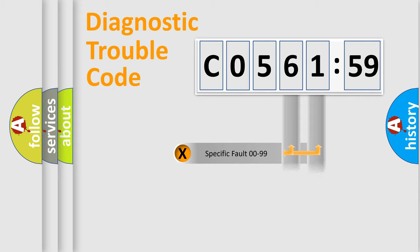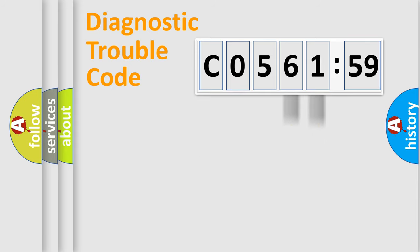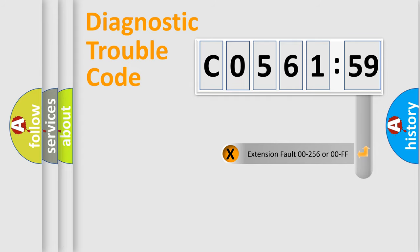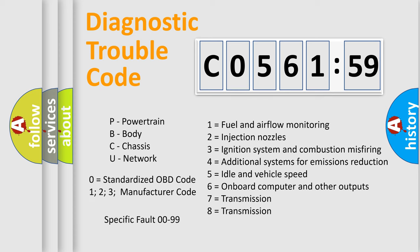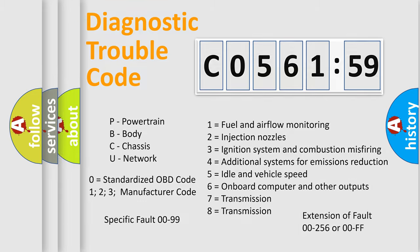Only the last two characters define the specific fault of the group. The add-on to the error code serves to specify the status in more detail — for example, a short to ground. Such a division is valid only if the second character code is expressed by the number zero.